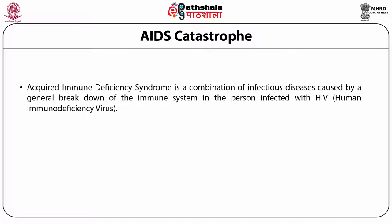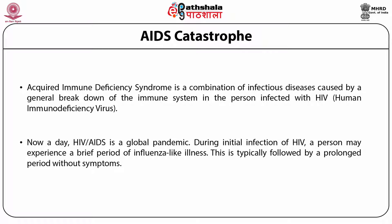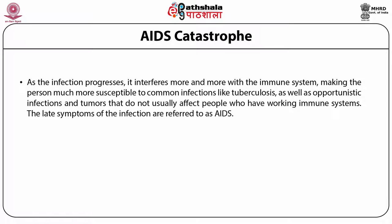Acquired immune deficiency syndrome (AIDS) is a combination of infectious diseases caused by the general breakdown of the immune system in a person infected with HIV, the human immunodeficiency virus. Nowadays, HIV/AIDS is a global pandemic. During initial infection of HIV, a person may experience a brief period of influenza-like illness, typically followed by a prolonged period without symptoms. As the infection progresses, it interferes more and more with the immune system, making the person much more susceptible to common infections like tuberculosis as well as opportunistic infections and tumors.